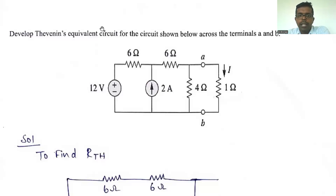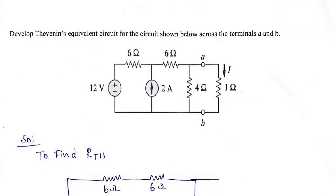Good morning. Today we are going to see a problem on Thevenin's theorem. Develop the Thevenin equivalent circuit across the terminals. The voltage source is given as 12 volts, resistance is given as 6 ohms, and a current source is also given. There are two terminals A and B, and the load resistance is given as 1 ohm. We need to find out the current.